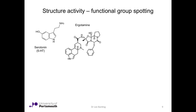If we bring up serotonin, it looks quite a different molecule. We can see aromatic nature and a five-membered ring with an NH, which looks similar to that of ergotamine, and there's a primary amine group. But it may not be so obvious what the functional groups in ergotamine are that interact with the serotonin system.